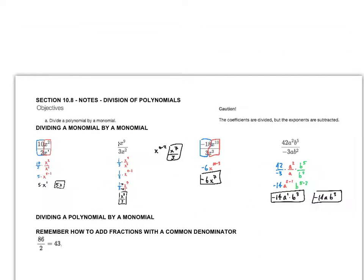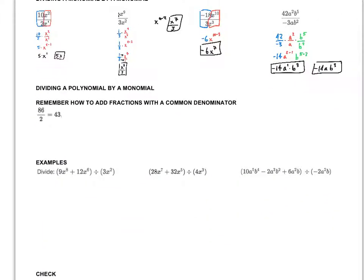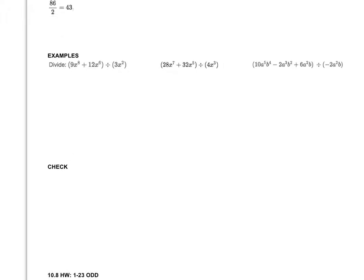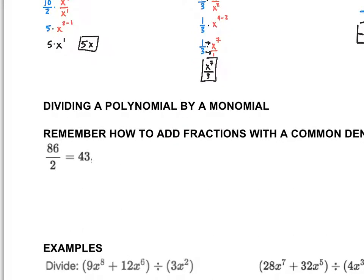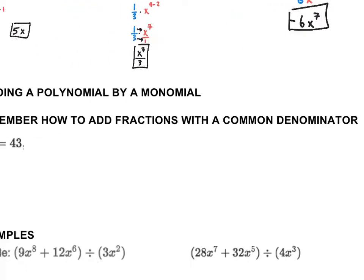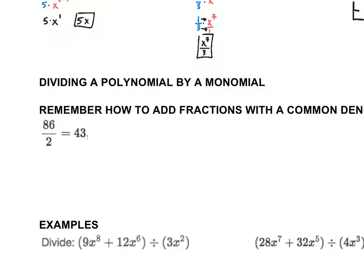Those are just dividing monomials. We need to know how to do this in order to continue into these problems. Now what I'm going to do: remember when we added fractions with a common denominator — if I divide a polynomial, something a bit bigger, divided by a monomial, I need to think about fractions first.